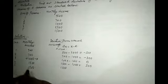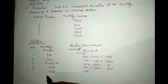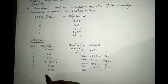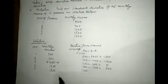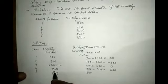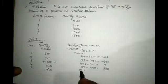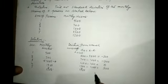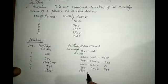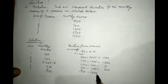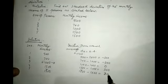1300 minus 1000, this will be equal to 300.